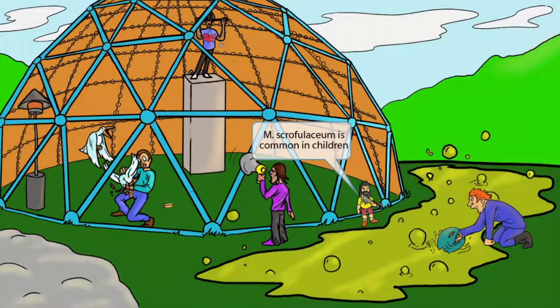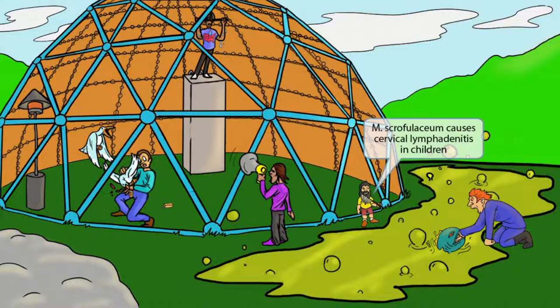Now let's turn our attention to the scruffy kid. The fact that he's a child should help you remember that Mycobacterium scrofulaceum commonly affects children. He's holding a beaded net, which should make you think of the lymphatic system, and the fact that it's up by his neck region should make you think of the cervical region. Putting these two ideas together should help you remember that Mycobacterium scrofulaceum causes cervical lymphadenitis in children.